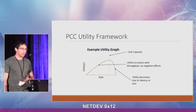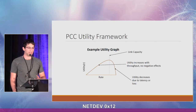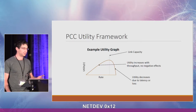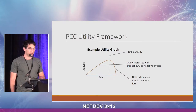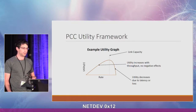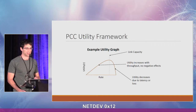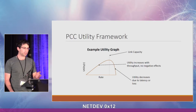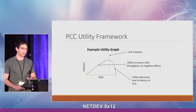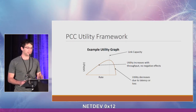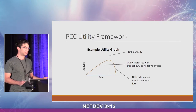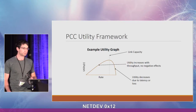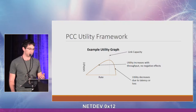The utility function should reflect the application's performance objectives — things like high throughput, low latency, jitter, etc. It should also guarantee fairness when facing multiple PCC senders using the same utility. Here we have an example graph of a single PCC sender on a link where the utility increases as long as the rate is below the link capacity, and once it's above, it starts to decrease. We want to maximize utility.